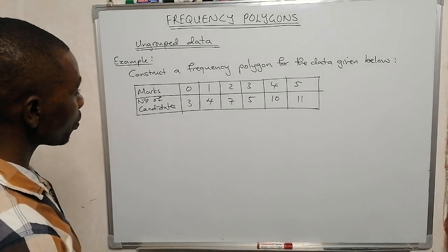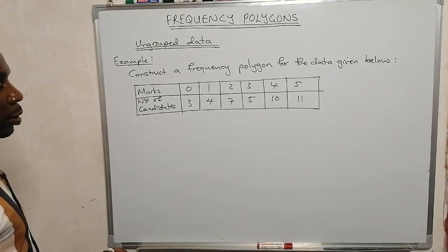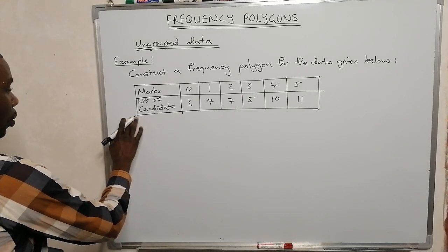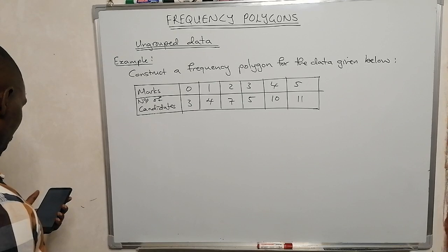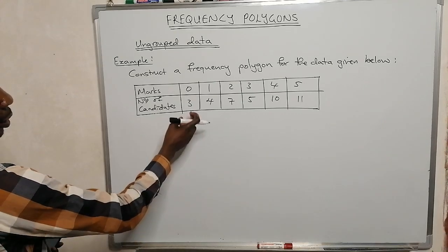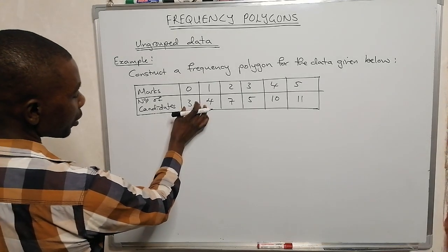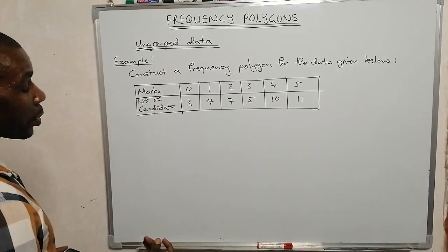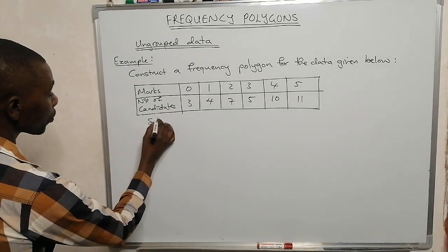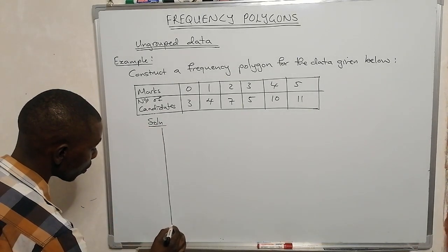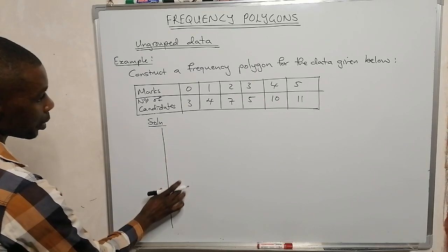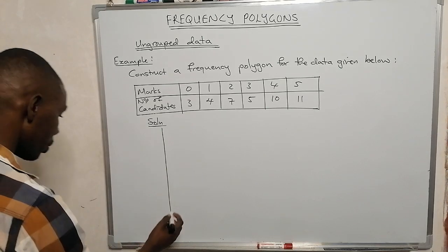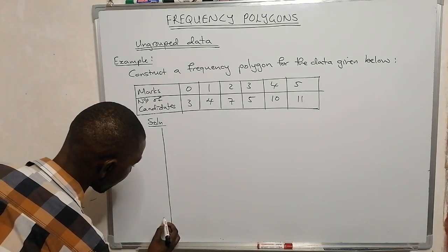Unlike grouped data, where we have to calculate what we call frequency density, with this ungrouped information we can construct a frequency polygon directly. Our least value is 3 and the greatest value is 11. For the scale, we can use 2, 4, 6, up to 12, and for the x-axis we use 0, 1, 2, 3, 4, 5.